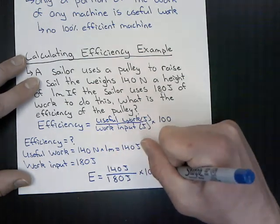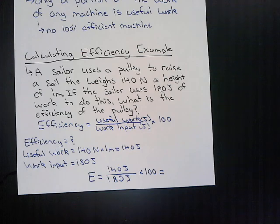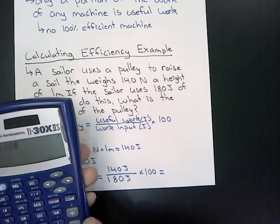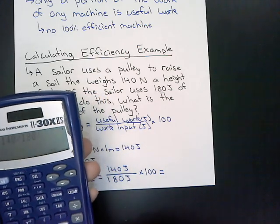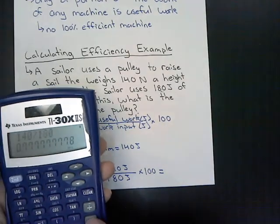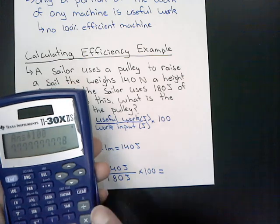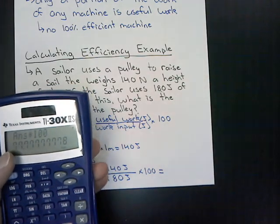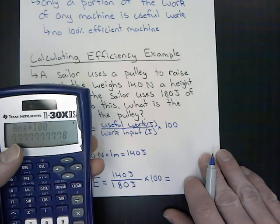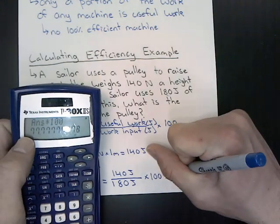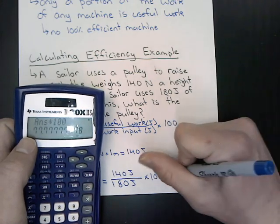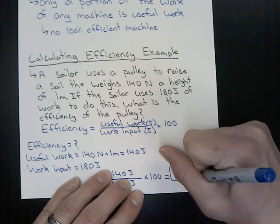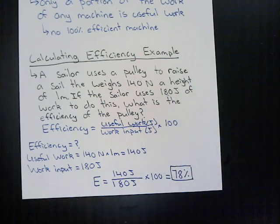Plugging this into the calculator: 140 divided by 180, then multiplied by 100, gives us approximately 78%. So this particular pulley on the sailboat is 78% efficient. That's a longer section here with Section 13.4 — I hope you enjoyed this video, and as always, make sure you subscribe.